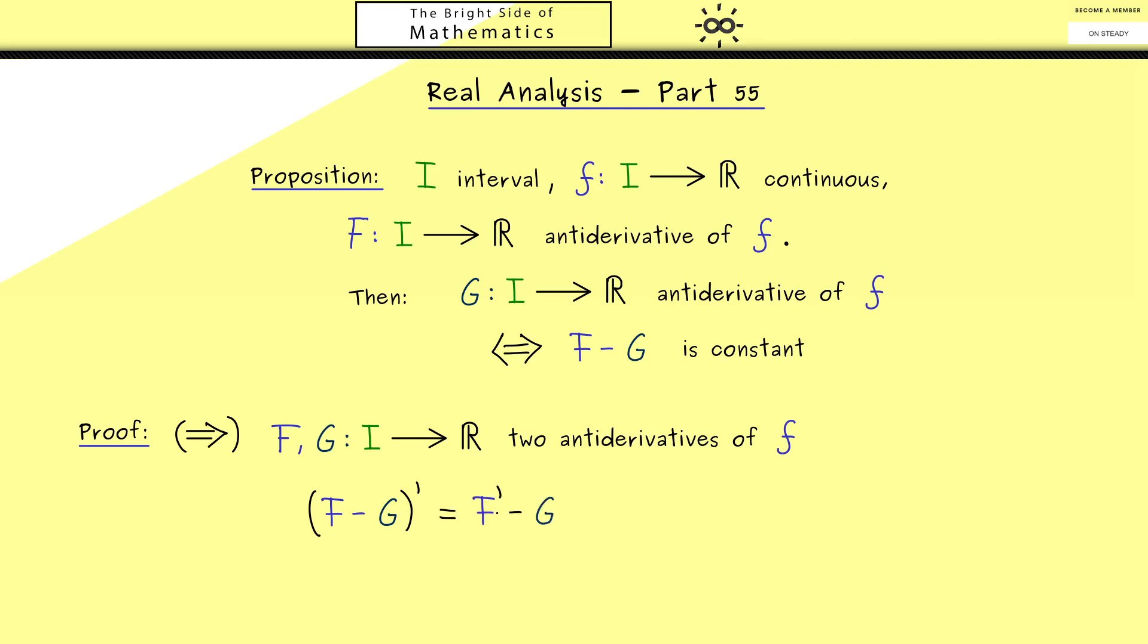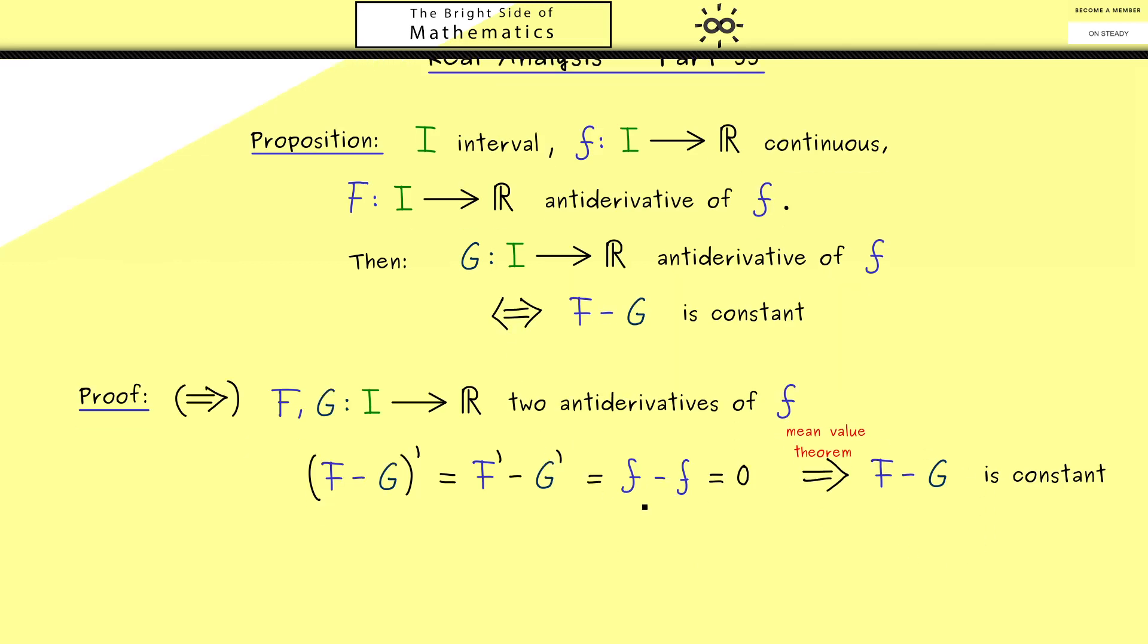Moreover, we also know we have linearity for forming derivatives. More precisely, we can write this as F prime minus G prime. And now we can simply use the fact that both functions are antiderivatives of f. Therefore we have f minus f, which is, as you also know, just zero. Hence we can just conclude that F minus G is a constant function. Now what comes in here is the mean value theorem. In fact, we have exactly proven this in Part 41. With this, you see the first implication here is finished.